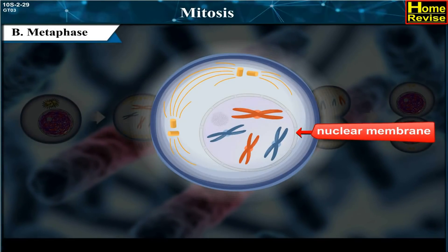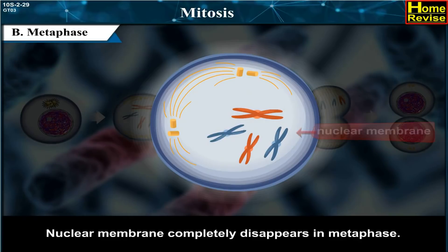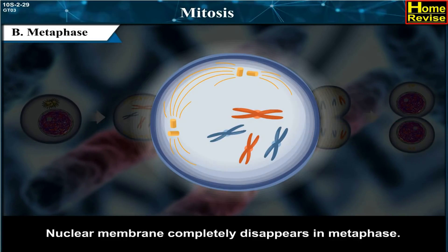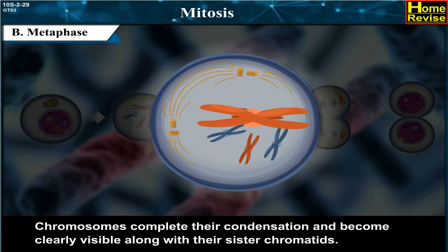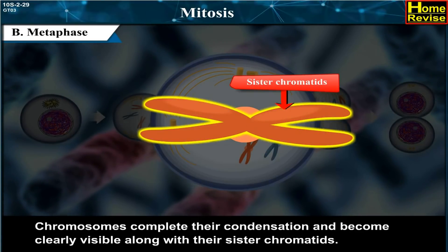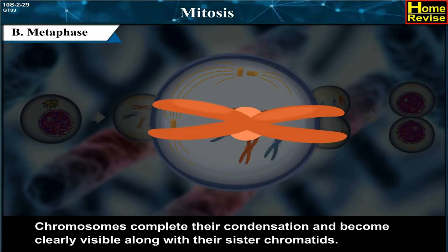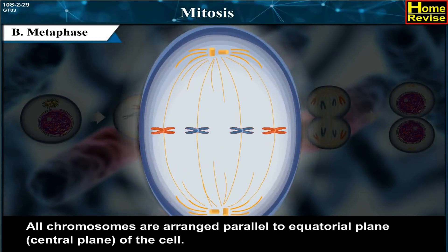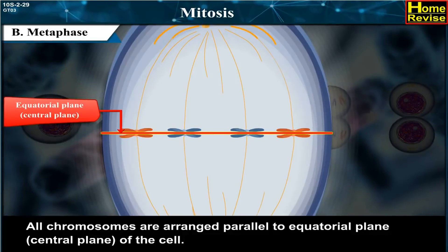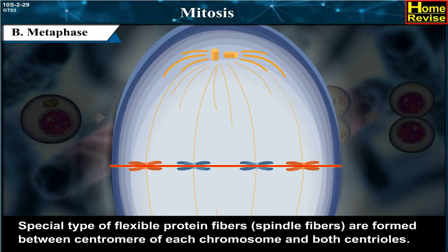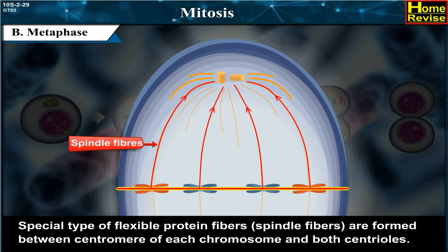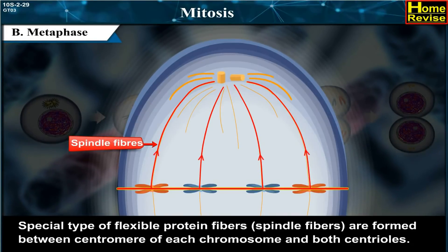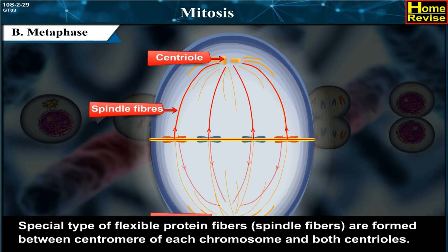In Metaphase, the nuclear membrane completely disappears. Chromosomes complete their condensation and become clearly visible along with their sister chromatids. All chromosomes are arranged parallel to the equatorial plane, i.e., the central plane, of the cell. Special type of flexible protein fibres, i.e., spindle fibres, are formed between the centromere of each chromosome and both centrioles.